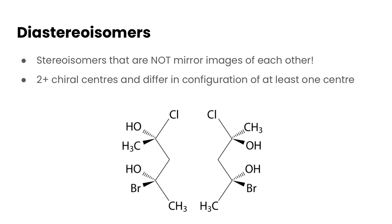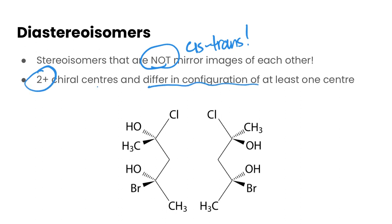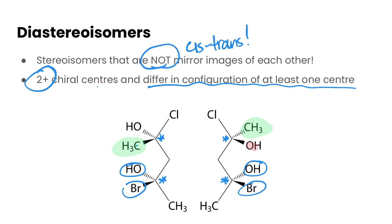The last term we need is diastereoisomers. These are stereoisomers that are not mirror images of each other, and they include cis-trans isomers. The other type arises when you have two or more chiral centers that differ in configuration at least one of those centers. In this molecule, we have chiral carbons at two positions. In one structure the bromine goes up and the OH goes down in both, but in the other the CH3 and hydroxyl group positions differ — so these two centers are the same but these two are different, making them diastereoisomers.